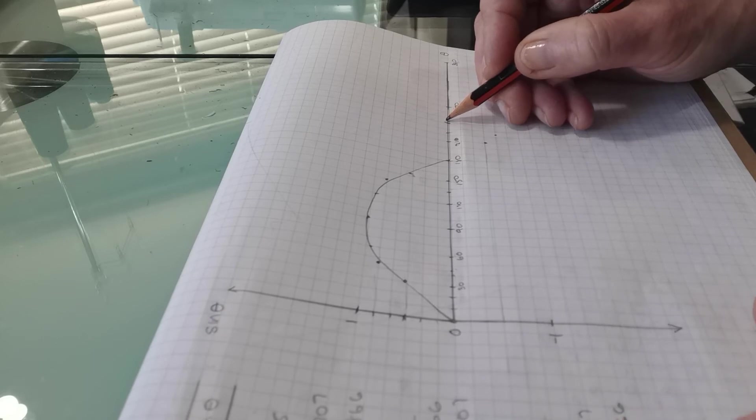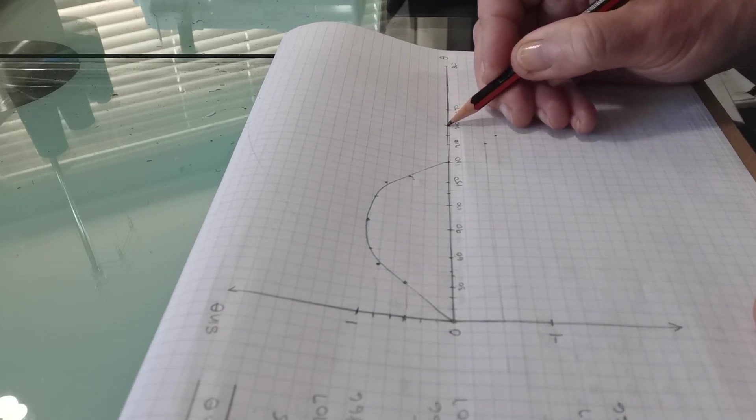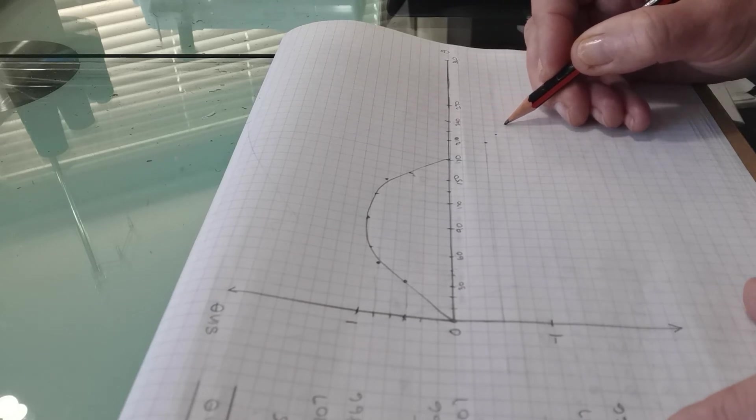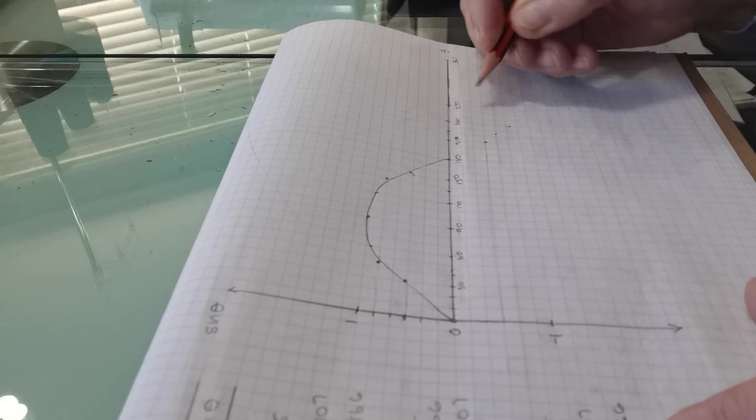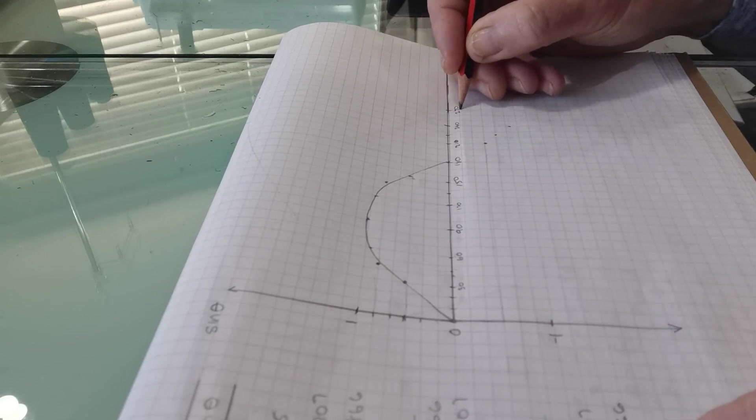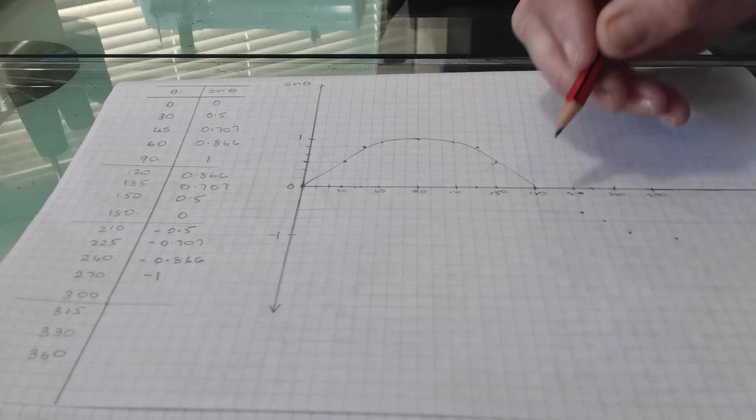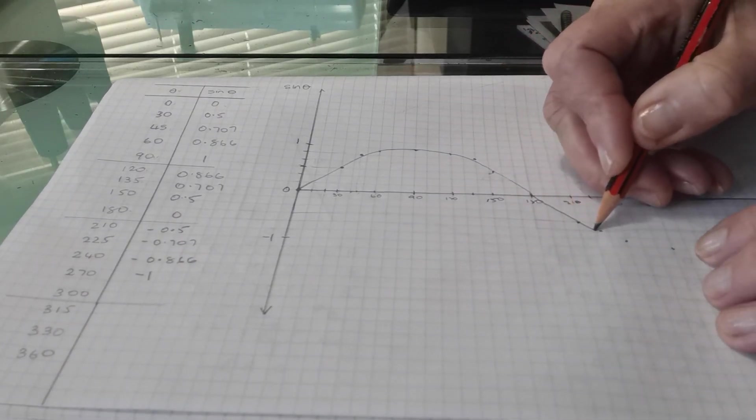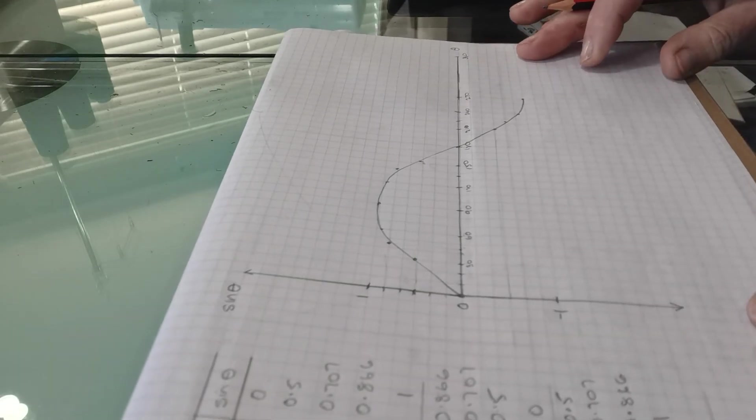And the next one is the 45 mark and it's negative 0.707, which is about here. And the next one is 240 degrees. And that's just about 0.9, which is here. And then 270 is negative 1. So I'll just turn my page to the side and draw a smooth curve through those points. And you can see I've nearly finished my curve.